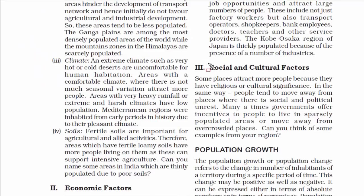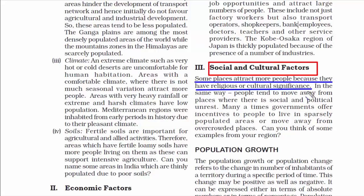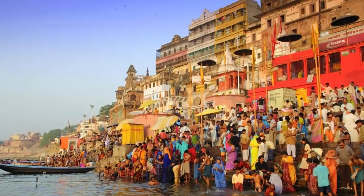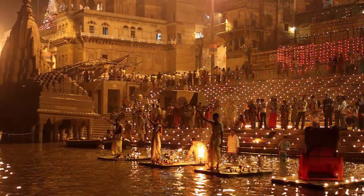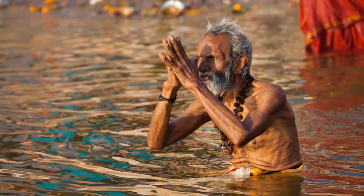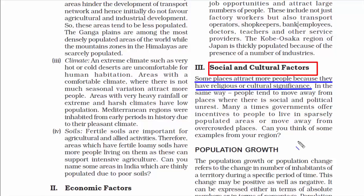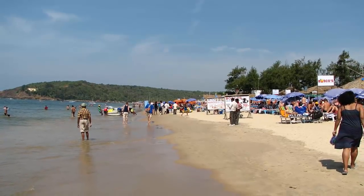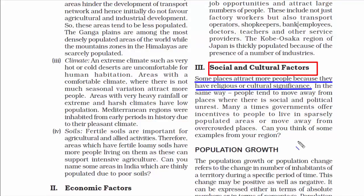Going to the third and last factor affecting population distribution: social and cultural factors. Some places attract more people because they have religious or cultural significance. For example, Varanasi — often known as the land of spirituality — where people visit for temples or to take a holy dip in the River Ganga. And Goa, which thrives on a culture that resonates among young couples and people who love socializing and adventure sports.